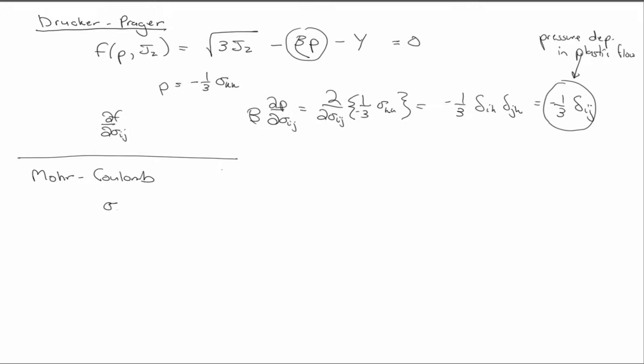And so, in terms of the principal stresses, it has a form that looks like this. And so, this phi now is called the angle of repose, or sometimes you might hear it, the more common way, the angle of internal friction.